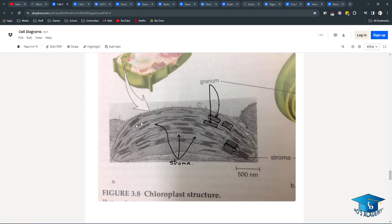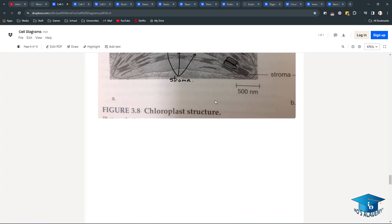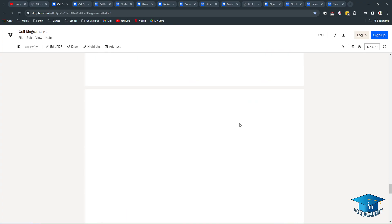The granum and stroma. This is within a chloroplast. The stroma are the spaces in between granum, and each granum is a stack of thylakoids, like little coin structures.